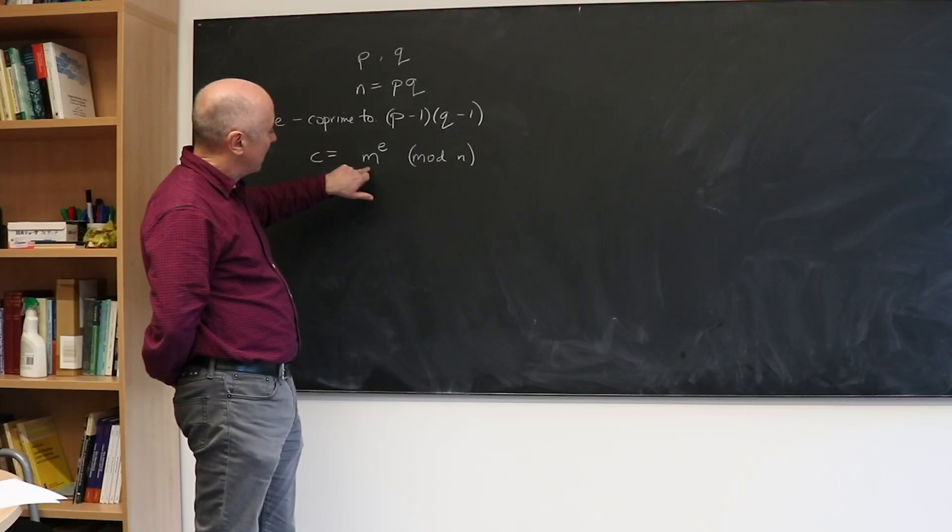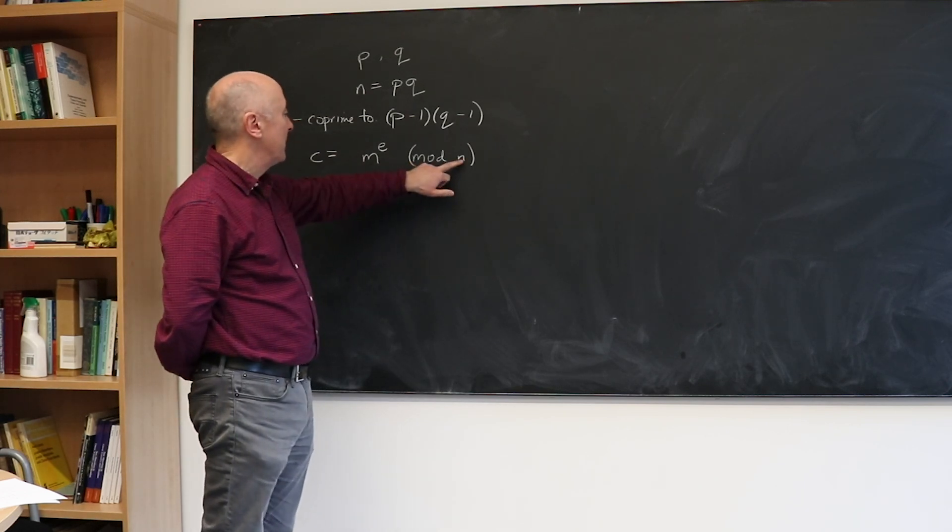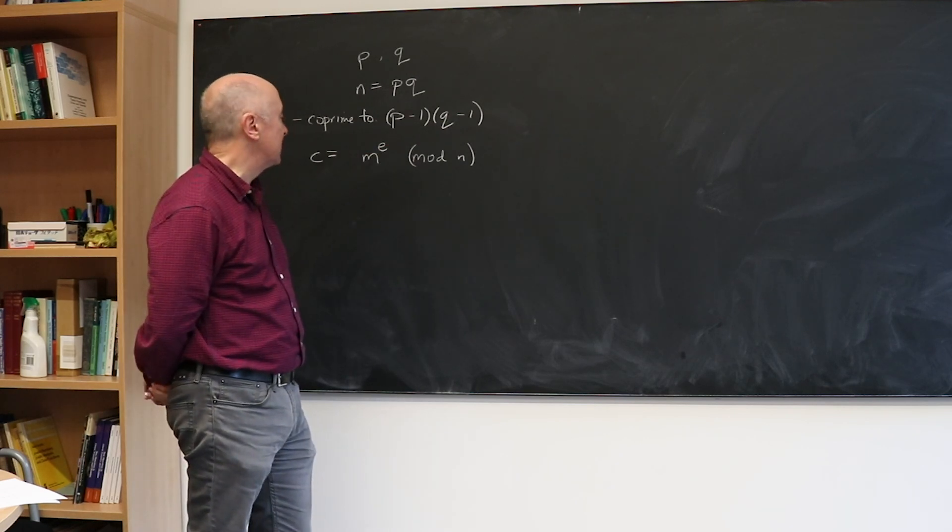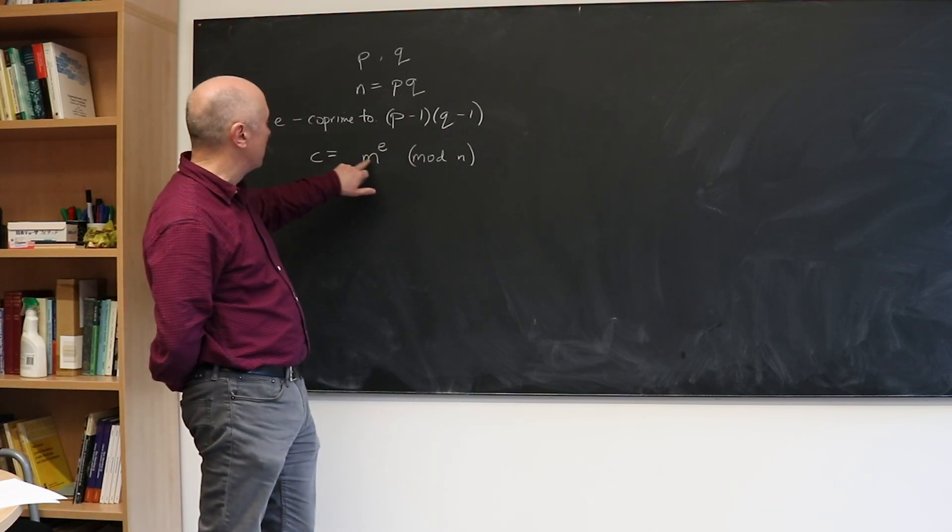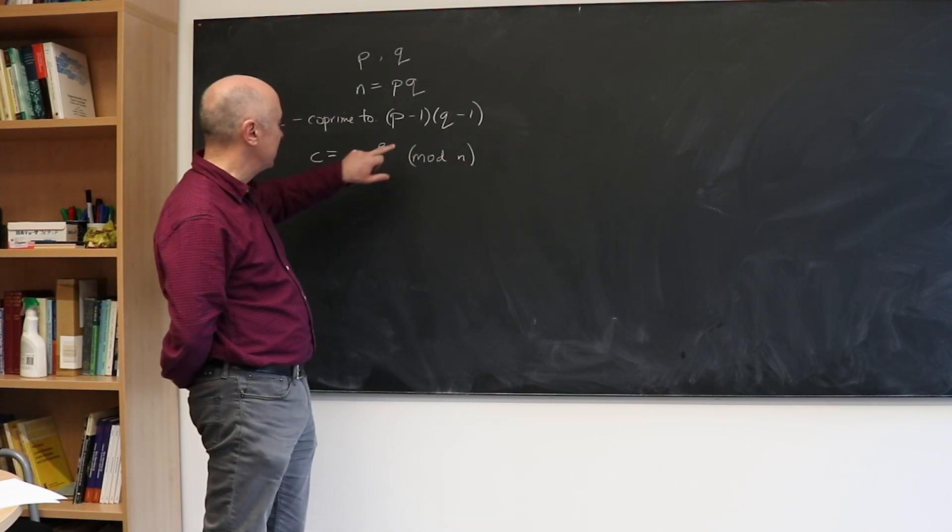They want to send me their number M. So they know M, they know that my public key is N and E, those are things that I would advertise, and so they can form C from their message and my public key which is N and E.